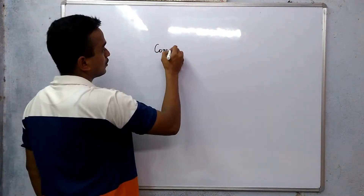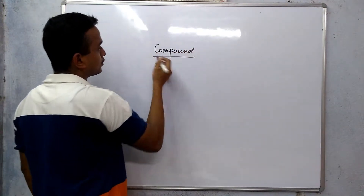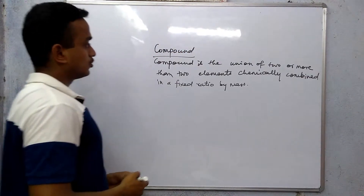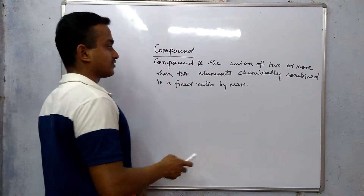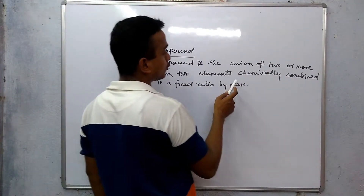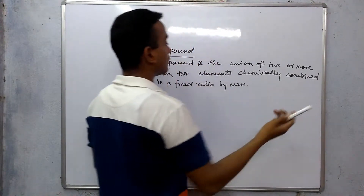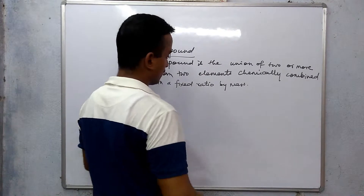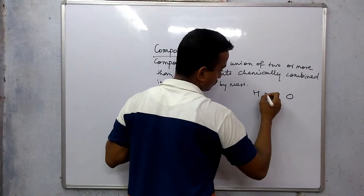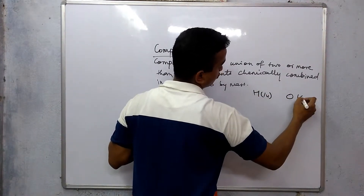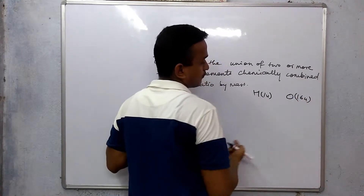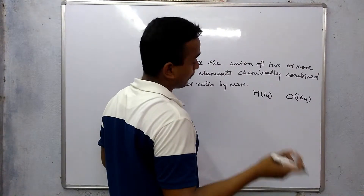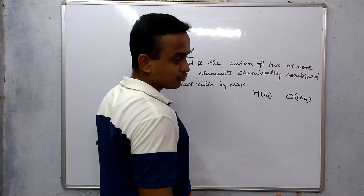Let's move to compound. What is a compound? Compound is a union — a combination of two or more elements, chemically combined, in a fixed ratio by mass. For example, hydrogen and oxygen: hydrogen is 1u, oxygen is 16u — 1 atomic mass unit equals 1.66 × 10⁻²⁴ grams.